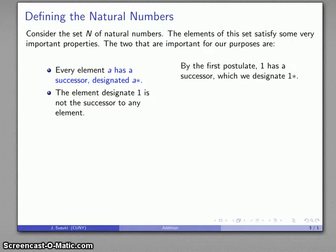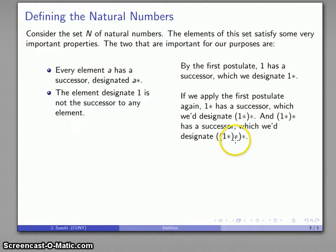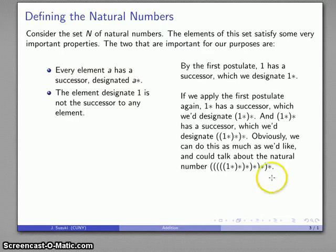Now, because we can apply the first postulate repeatedly, 1 star is a number. And so, 1 star has a successor. And we'll designate that as 1 star star. And, likewise, 1 star star is a number. So, it has a successor, which we'll define as 1 star star star. And we can do this as many times as we like. We can talk about the natural number 1 star star star star star star star. But after a couple of seconds, our eyes glaze over. And we go blind trying to read the parentheses and the asterisks and so on and so forth.